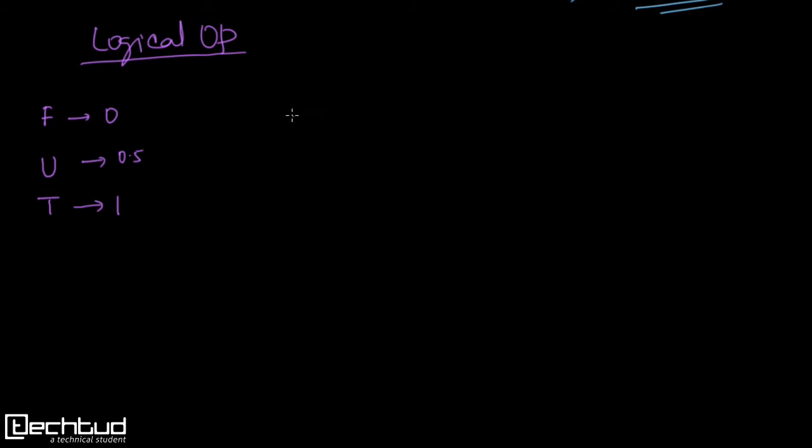We know that in case of AND operation what we take is the lowest of the operand. For example, if we have 0 and 1 then we take 0. If we have 1 and 1, lowest is 1, we take 1. If we have 0 and 0 we take 0. So we take the lowest. Now what if we do AND between false and unknown?